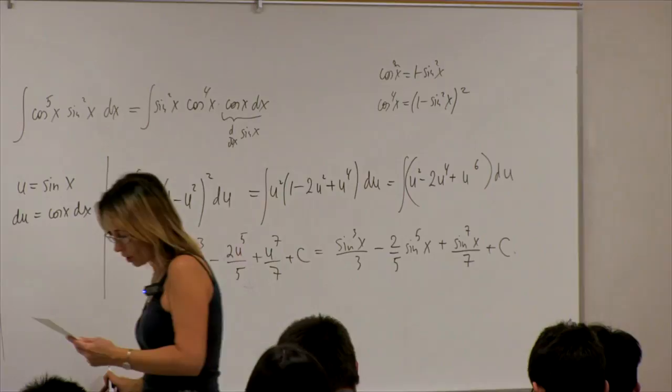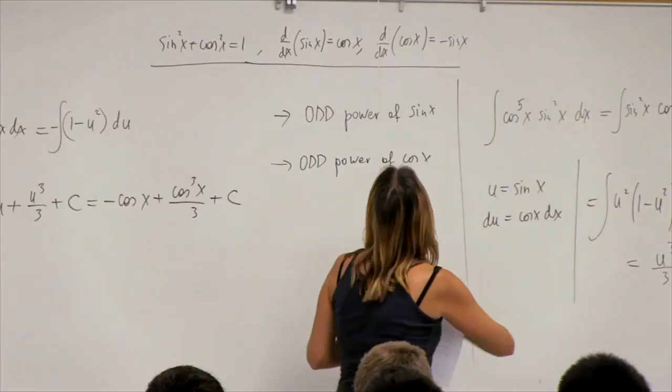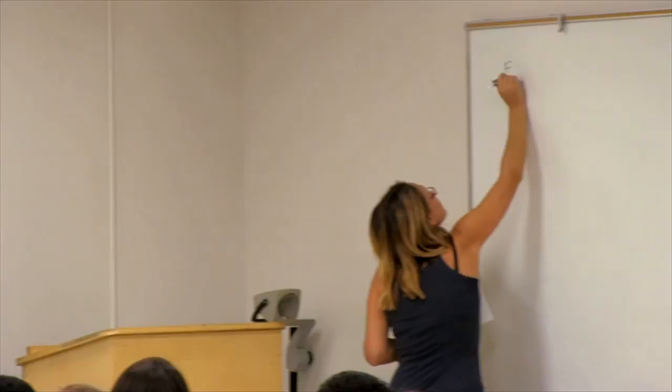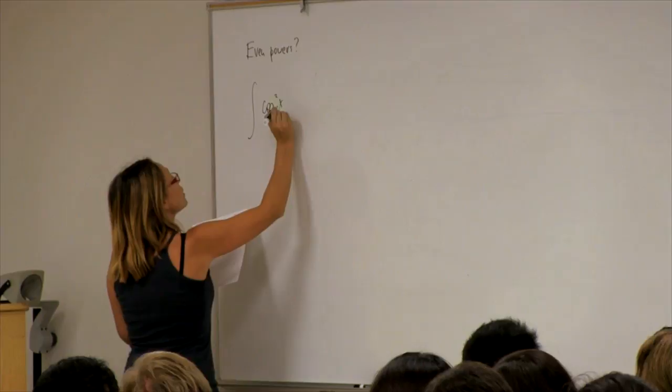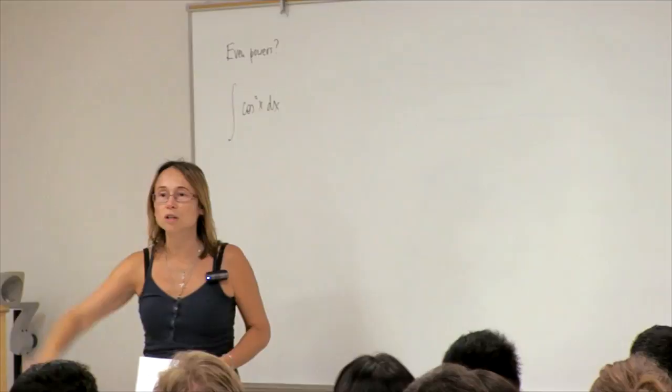With these two examples, either sine or cosine occurred with an odd power, and I used these rules. Now, what happens if both powers are even? Let's look at the integral of cosine squared x dx. The power of sine here is zero, which is considered even, and the power of cosine is two. The previous rules won't work, so I have to use different rules.